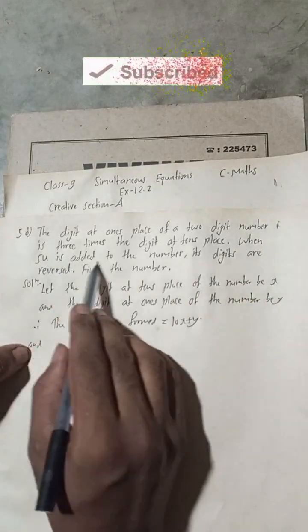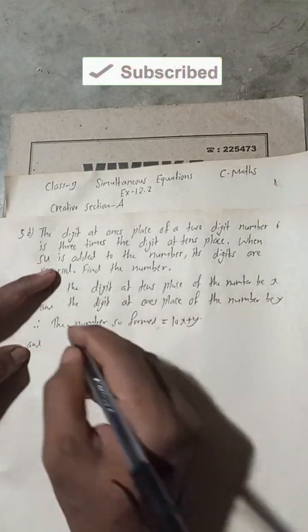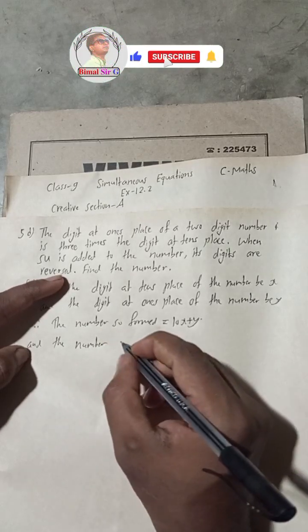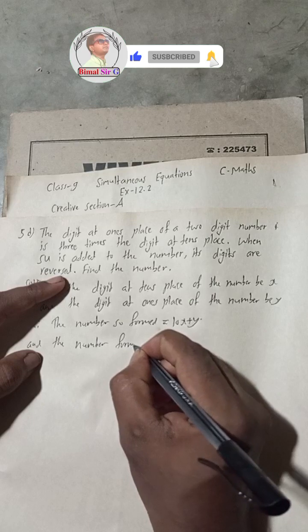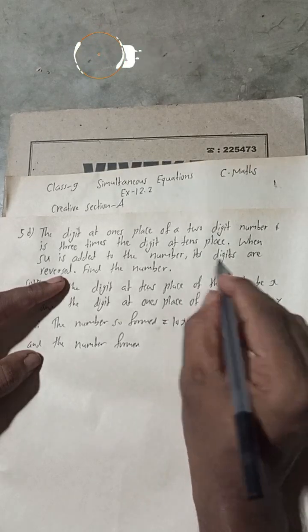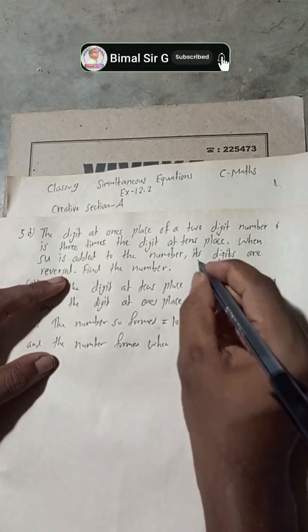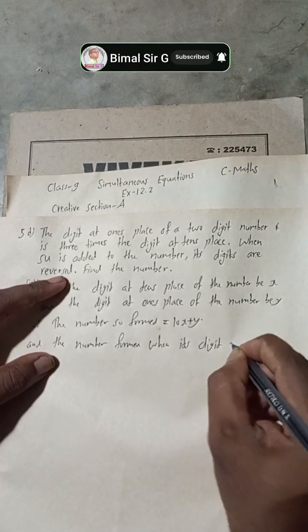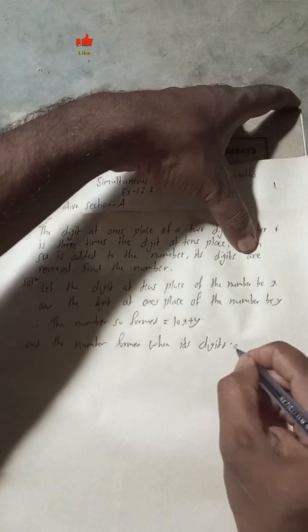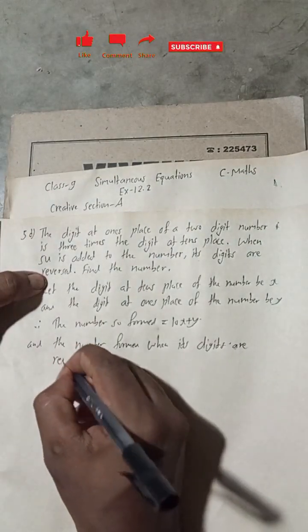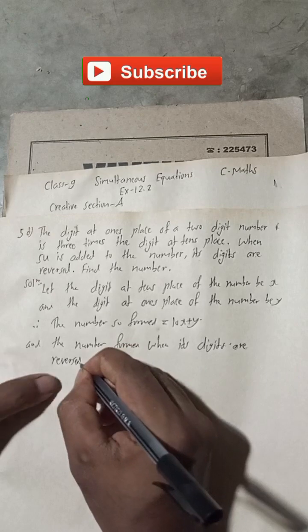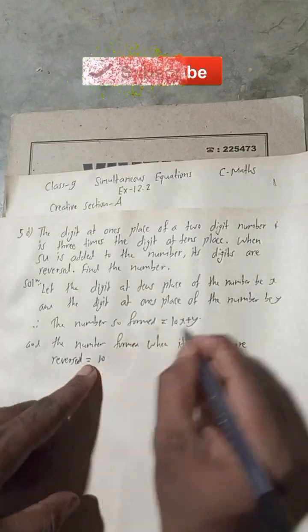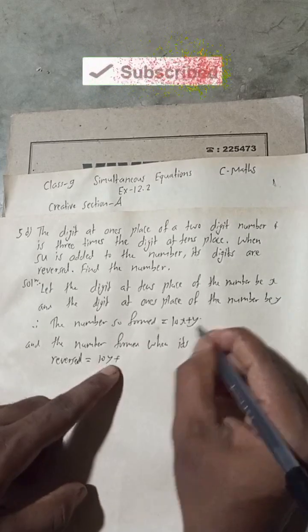When 54 is added to the number, its digits are reversed. So the number formed when its digits are reversed: where x was at tens place, y now takes that position, and where y was at ones place, x now takes that position — giving us 10y plus x.